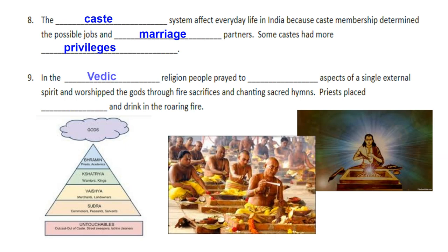And number nine, in the Vedic religion, people prayed to many aspects of a single external spirit. They worshiped the gods through fire sacrifices and chanting of sacred hymns. Priests would place food and drink in a roaring fire as part of that fire sacrifice to appease the gods.